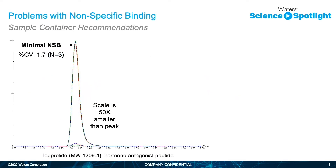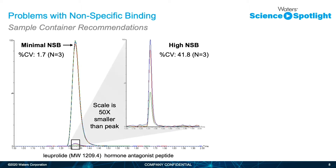Here the impact of nonspecific binding is depicted by therapeutic peptide luprolide. There are two different sets of peaks — one large, one small — but the only difference is the care taken to mitigate the nonspecific binding. In the mitigated case, we see far more sensitive and reproducible chromatography. Without that care, the percent CV increases to just about 42% and the peak is 50 times smaller.